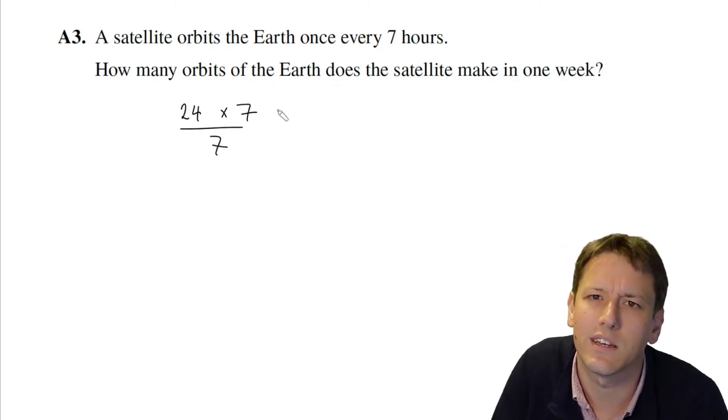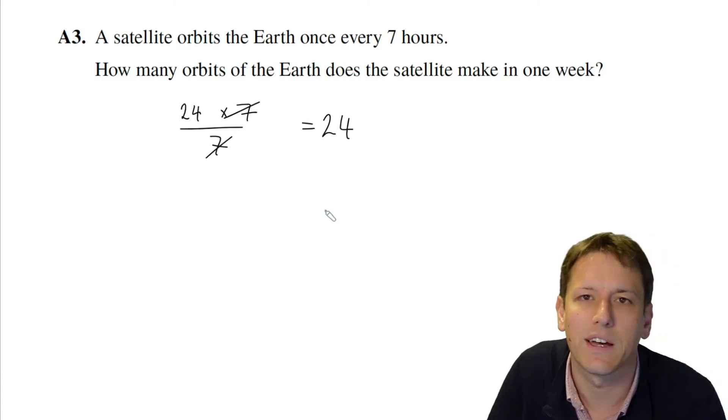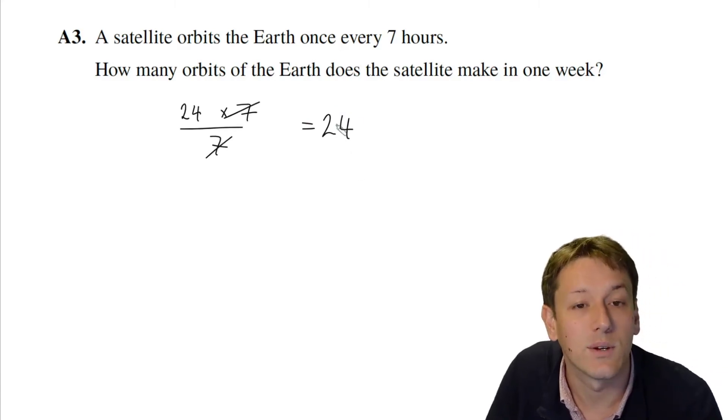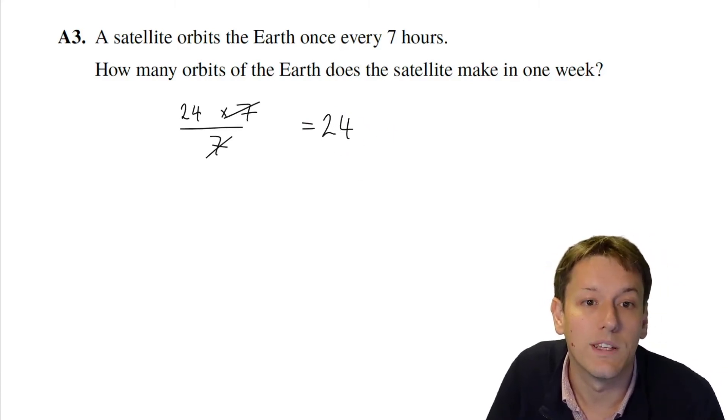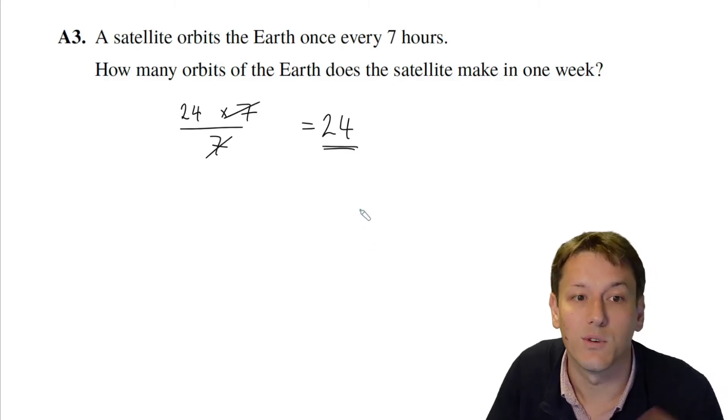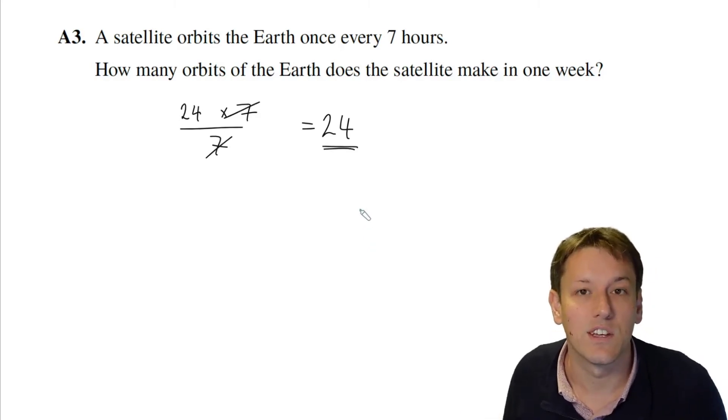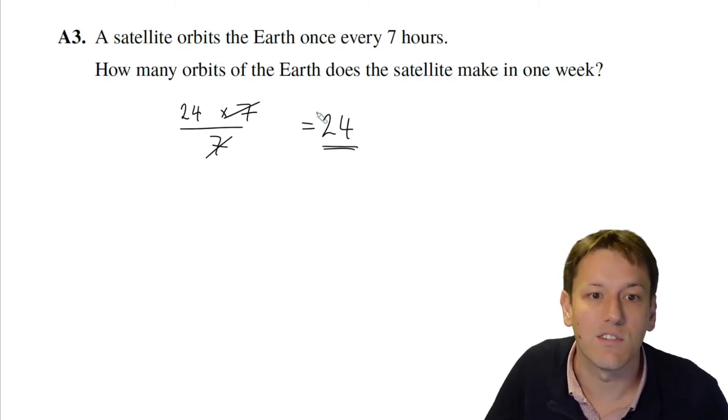But because it orbits every 7 hours, I want to do 24 times 7 and then divide it by 7. If you worked that out, I could do it without doing the multiplication—the 7s will just cancel here and we'll get back to 24. So it's going to do 24 orbits of the earth. 24 times 7 is the same as 7 times 24, so the answer here is 24.